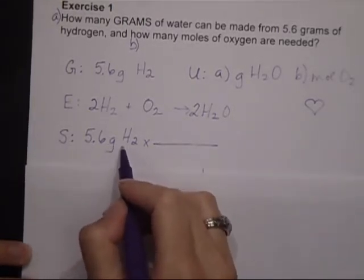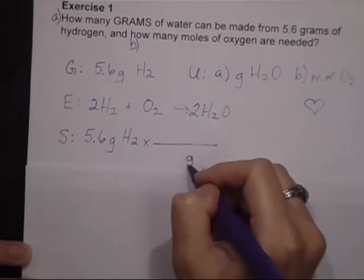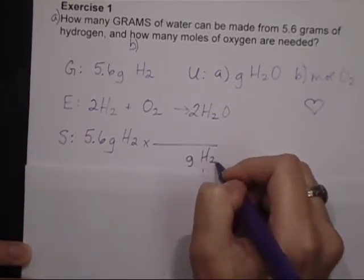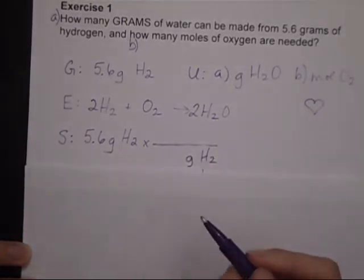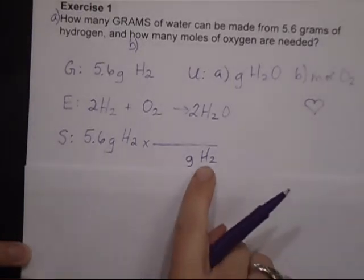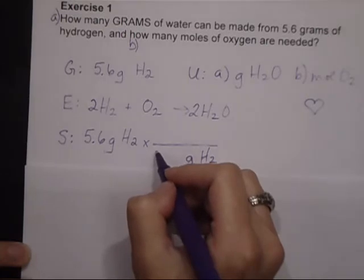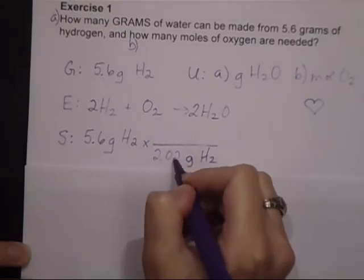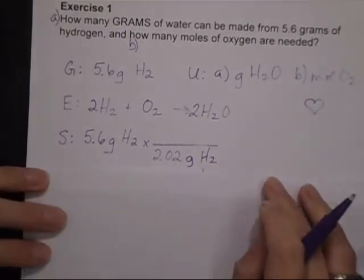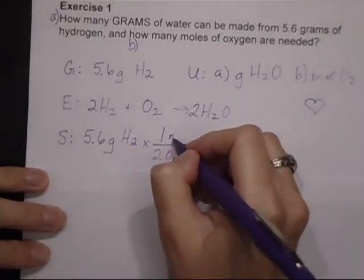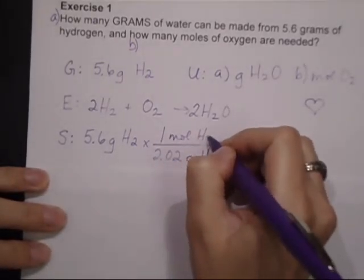I've got grams here at the top, so I'm going to have to put some number of grams of hydrogen at the bottom to cancel that, and I need my molar mass. Two hydrogens at 1.01 each gives me 2.02 grams of hydrogen in one mole of hydrogen.